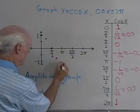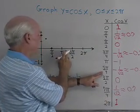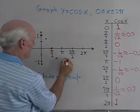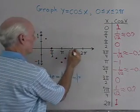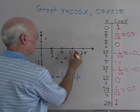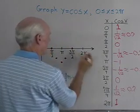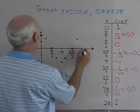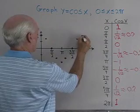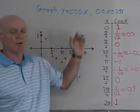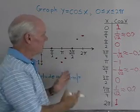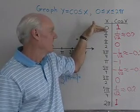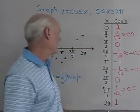Then I'm going to go back up at five pi over four, where I have negative 0.7 again. At three pi over two, y is equal to zero. At seven pi over four, I go back up to 0.7. And then at two pi, y is equal to one. So there I have a set of points on the graph of y equals cosine x.